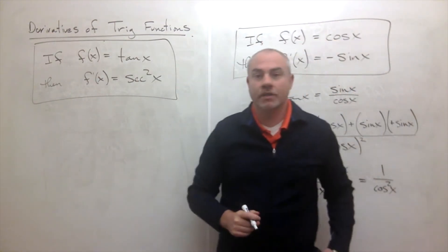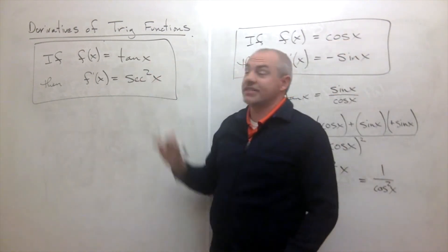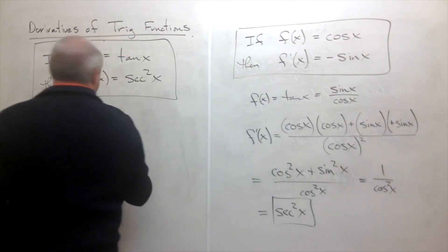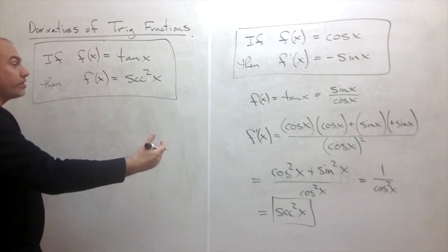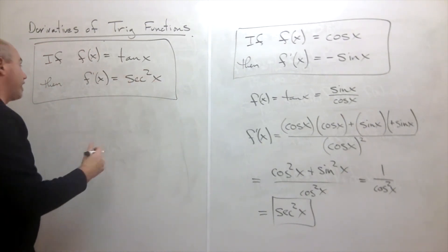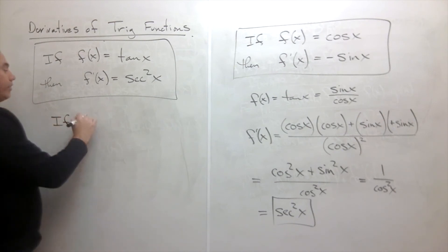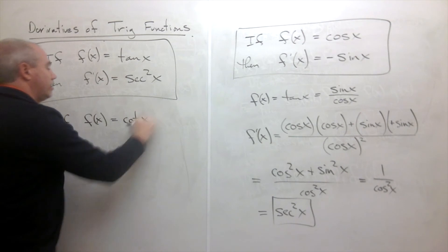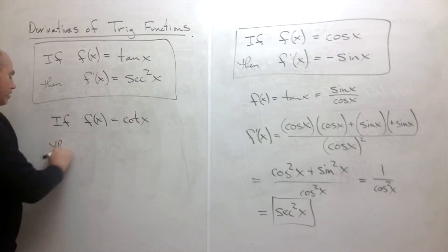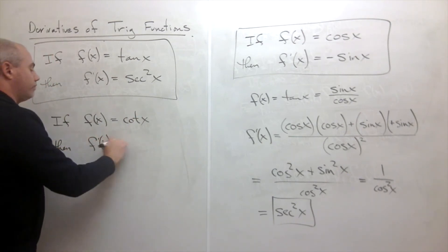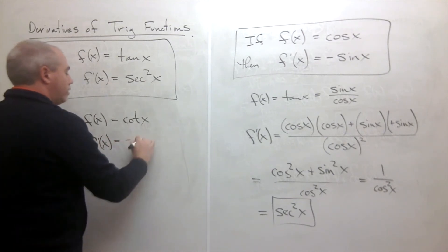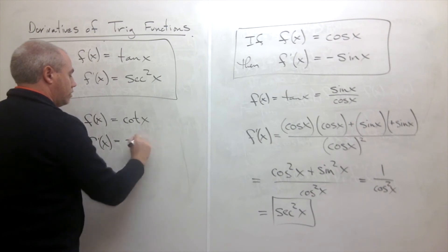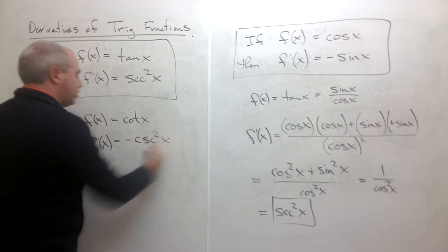We could do a very similar argument for cotangent of x — cotangent is just cosine of x over sine of x. If we applied the same process, we'd find that if f of x is equal to cotangent of x, then f prime of x is equal to negative cosecant squared of x.